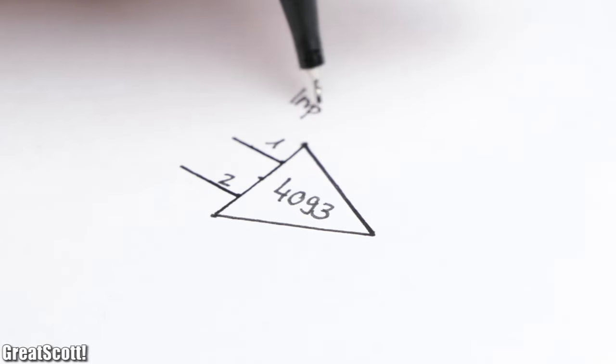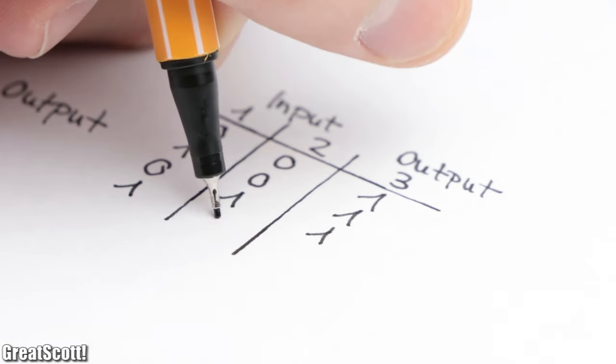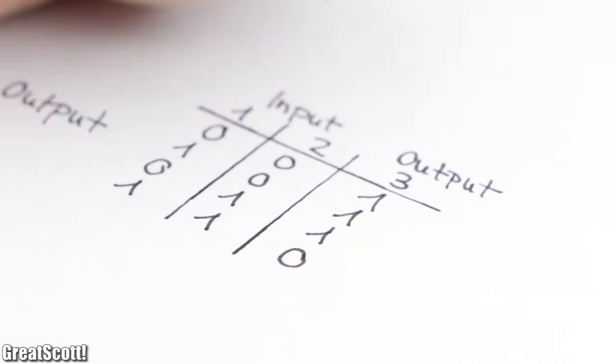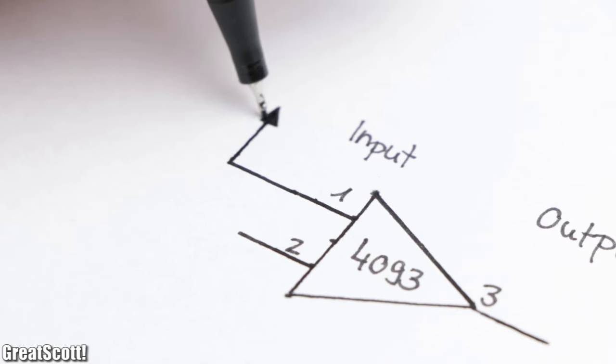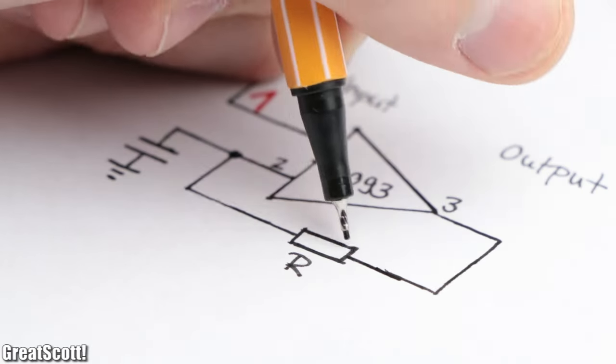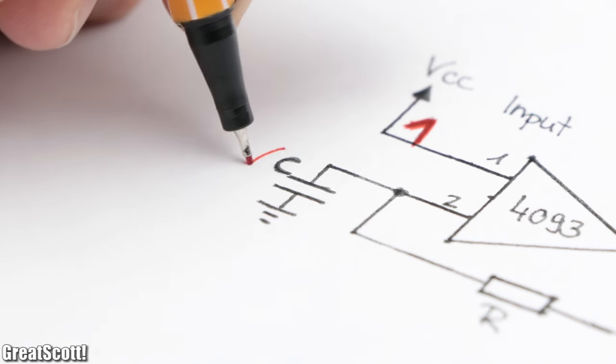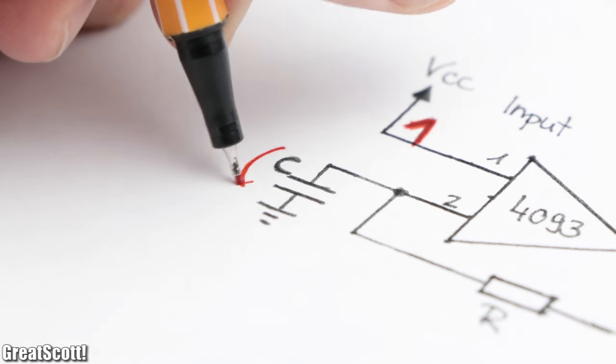The NAND IC has two inputs and one output and a truth table which looks like this. Basically the output is only low when both inputs are high. Now one input of the NAND is connected to the supply voltage, which means it is always a logical one, while the other input is connected to a simple RC circuit. At the beginning the capacitor is not charged up, which means the voltage at input two is zero volts, so a logical zero.